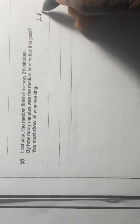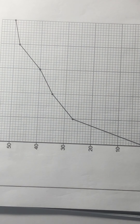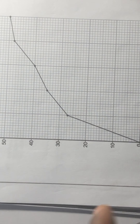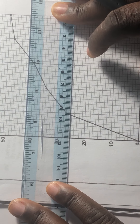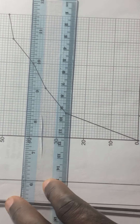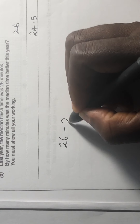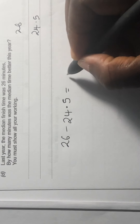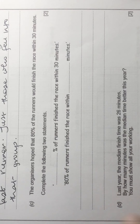Question 6d: Last year the median finish time was 26 minutes. Looking at the cumulative frequency graph this year — with 50 runners total, the median is at 25 — we follow that across to the time axis, which gives approximately 24.5 minutes. So 26 minus 24.5 equals 1.5 minutes improvement.